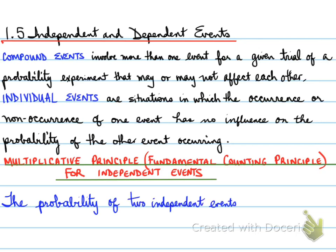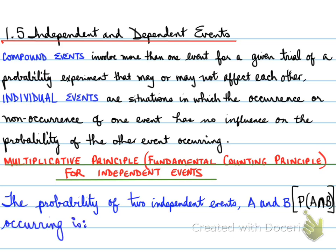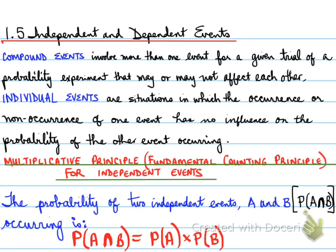The probability of two independent events A and B occurring — the probability of A and the probability of B — is equal to the probability of A times the probability of B. This formula applies when there are two independent events: they happen individually and they don't rely on each other.